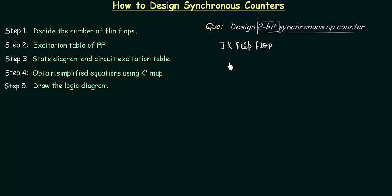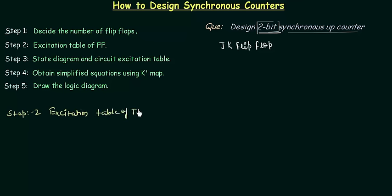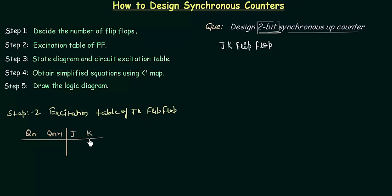You can also use T or D flip flop — there is no problem. Step number 2 says write the excitation table for the flip flop, so we have to write the excitation table for the JK flip flop. In the excitation table, the inputs are Qn (the present state) and Qn+1 (the next state), and we have to find out the values for J and K.